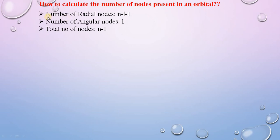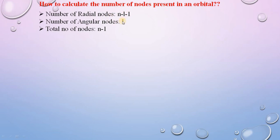The empirical formulas to calculate nodes: the number of radial nodes equals n minus l minus 1, where n is the principal quantum number and l is the angular quantum number. The number of angular nodes equals l. The total number of nodes equals the number of radial nodes plus l, which simplifies to n minus 1.